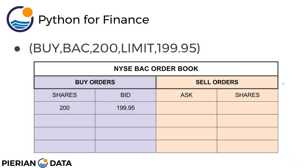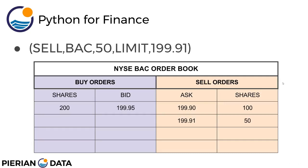We get our first sell order. This person is selling Bank of America, 100 shares, and the limit they're willing to sell at is $199.90. Then comes in another sell order: Bank of America, 50 shares, limit $199.91. Then another one — Bank of America, 50 shares — at $199.92. So what actually ends up happening here is the person that sent that buy order for 200 shares with the bid price of $199.95 is going to end up getting their shares from these three different people.